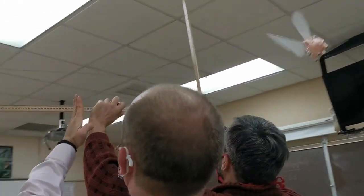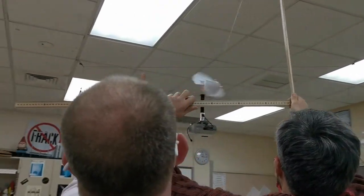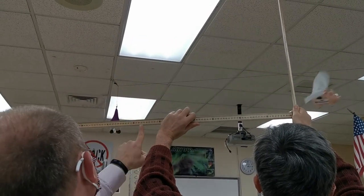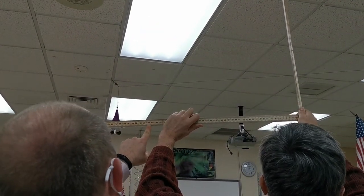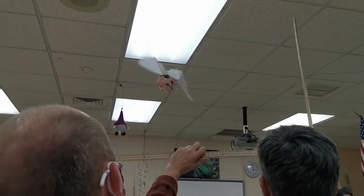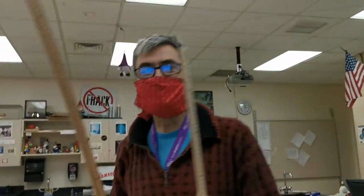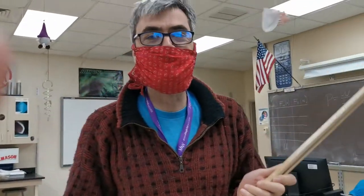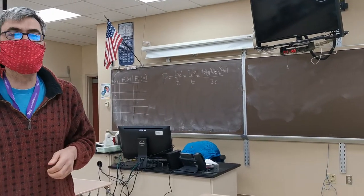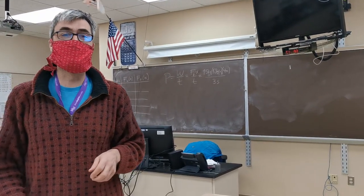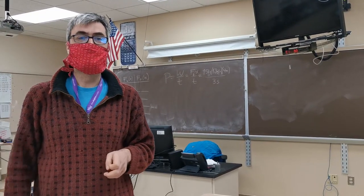I would say the radius for the middle of the pig is right at about 55 centimeters. Okay, so we've got 55 centimeters for the radius, and now Mr. Peterson is going to get out his stopwatch so that we can get the time for 10 revolutions.